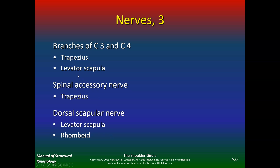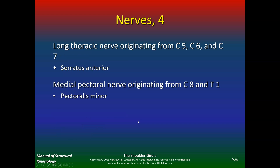A good quiz question could be: an overhead athlete such as a pitcher or thrower has damage to their dorsal scapular nerve — which muscles or which actions may be affected? So knowing the muscles and their actions would be important.